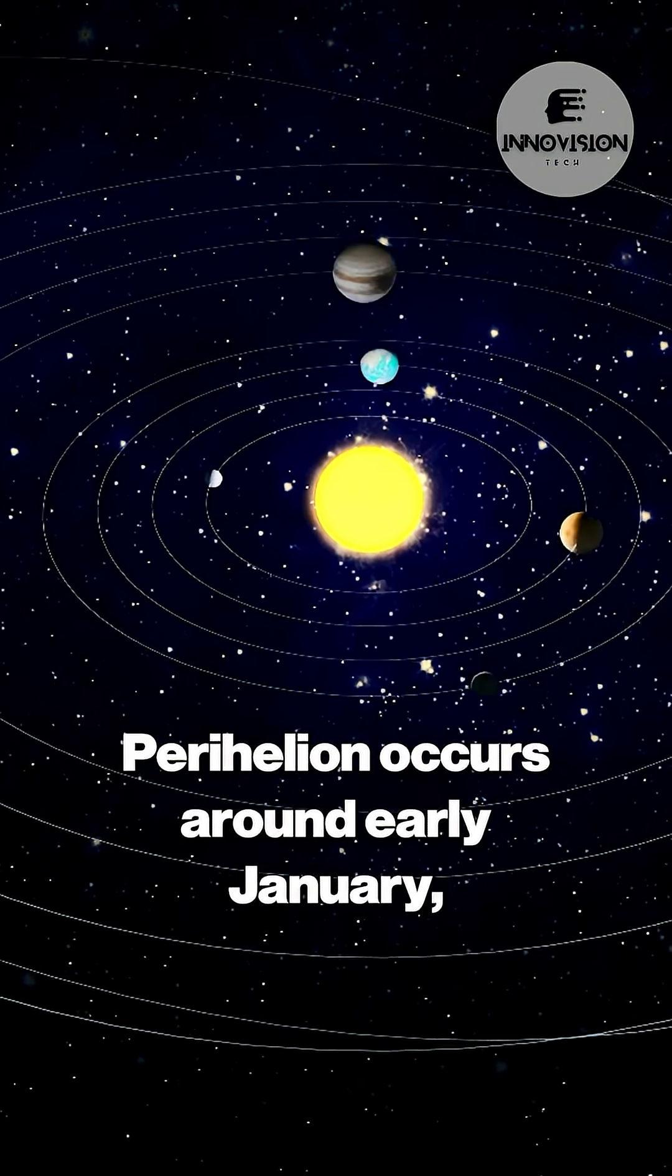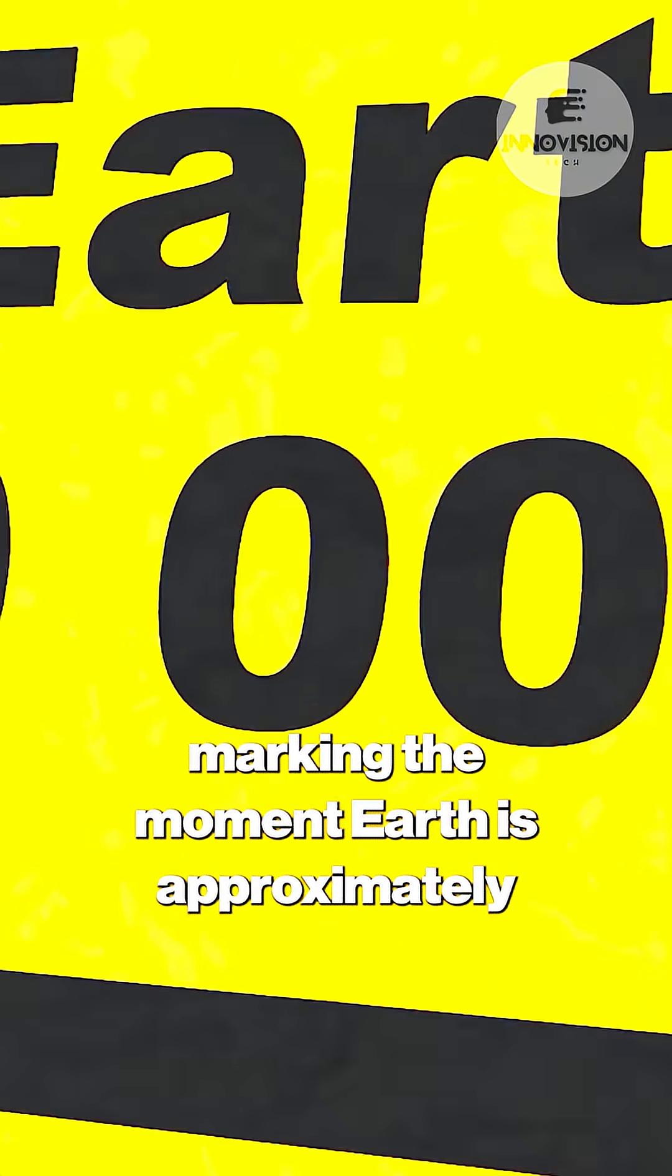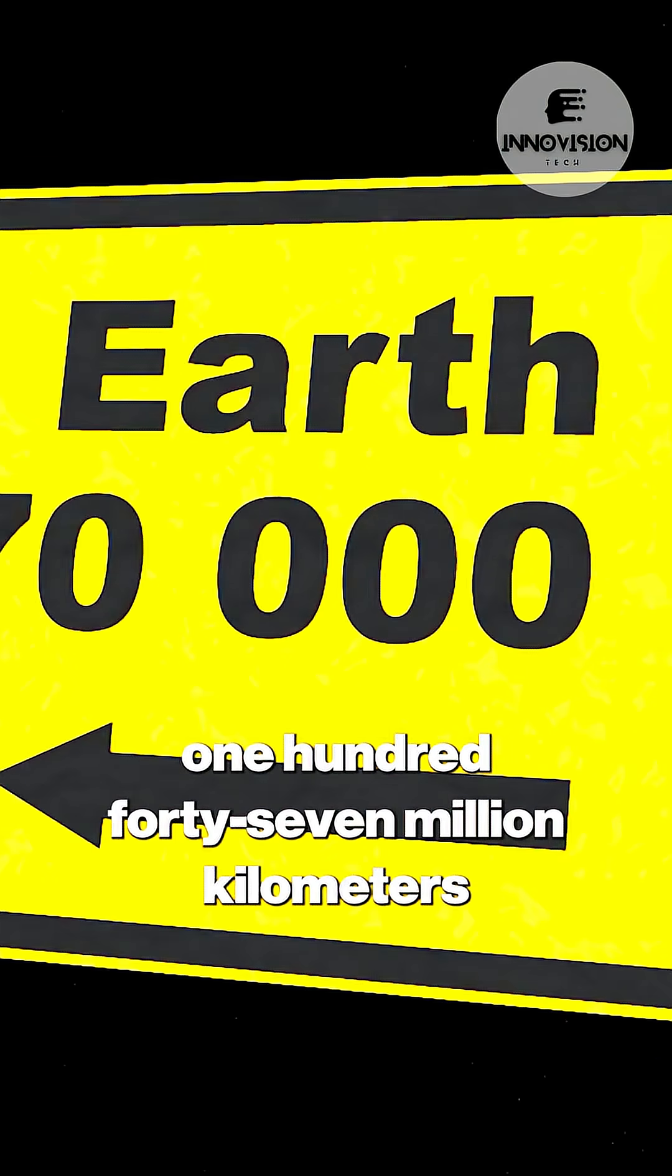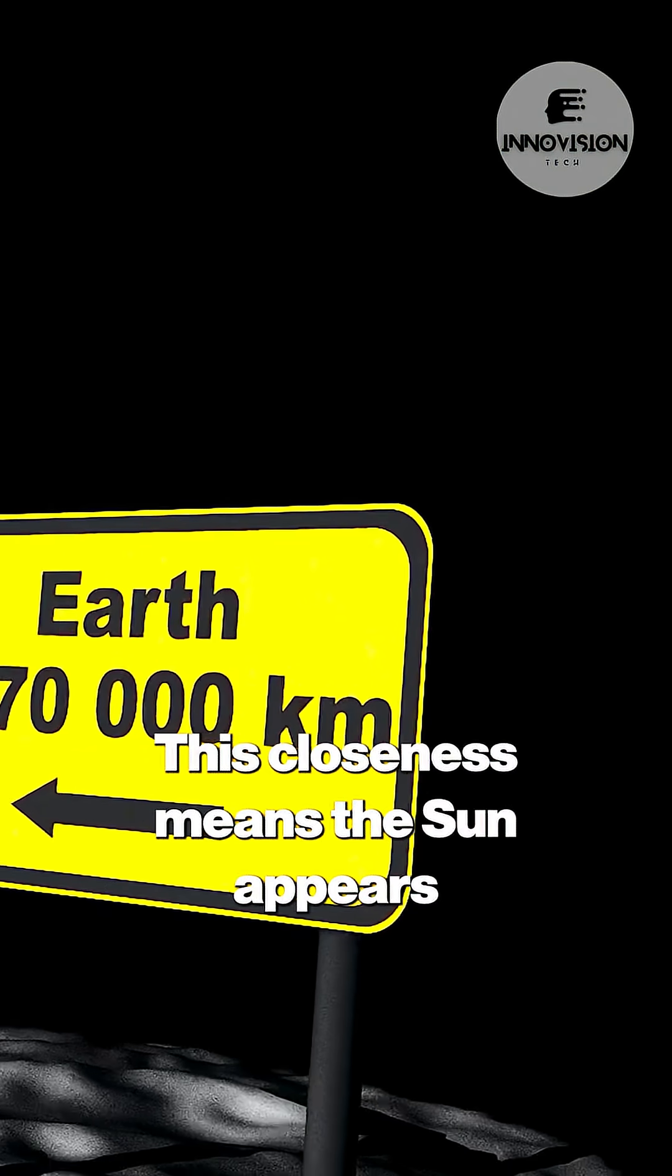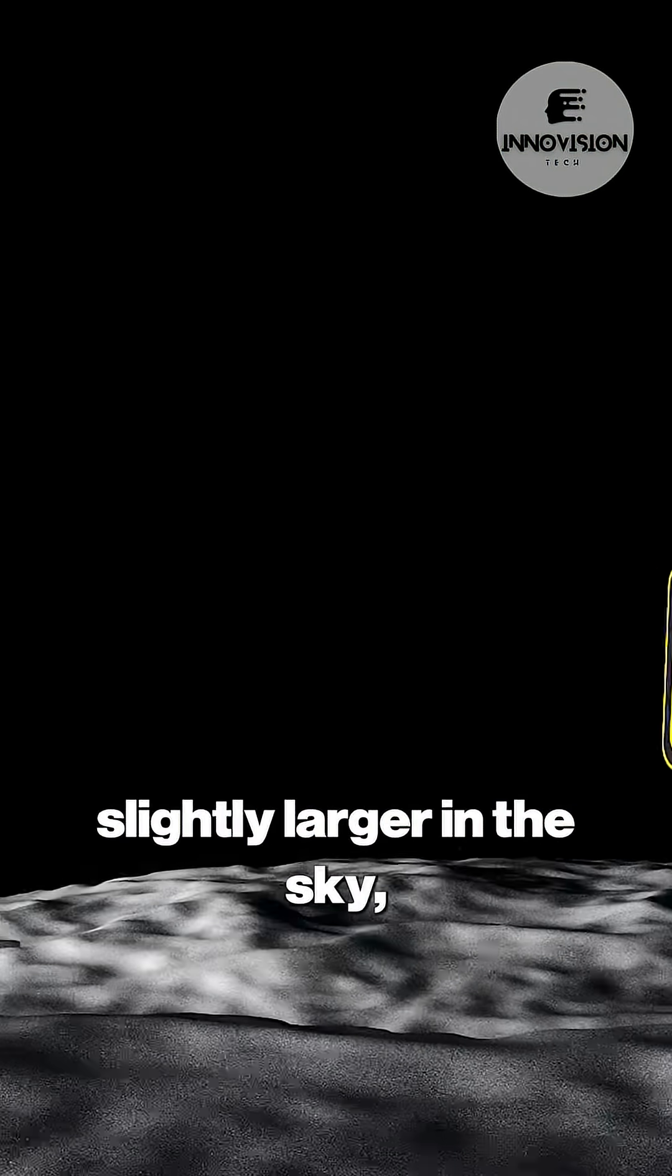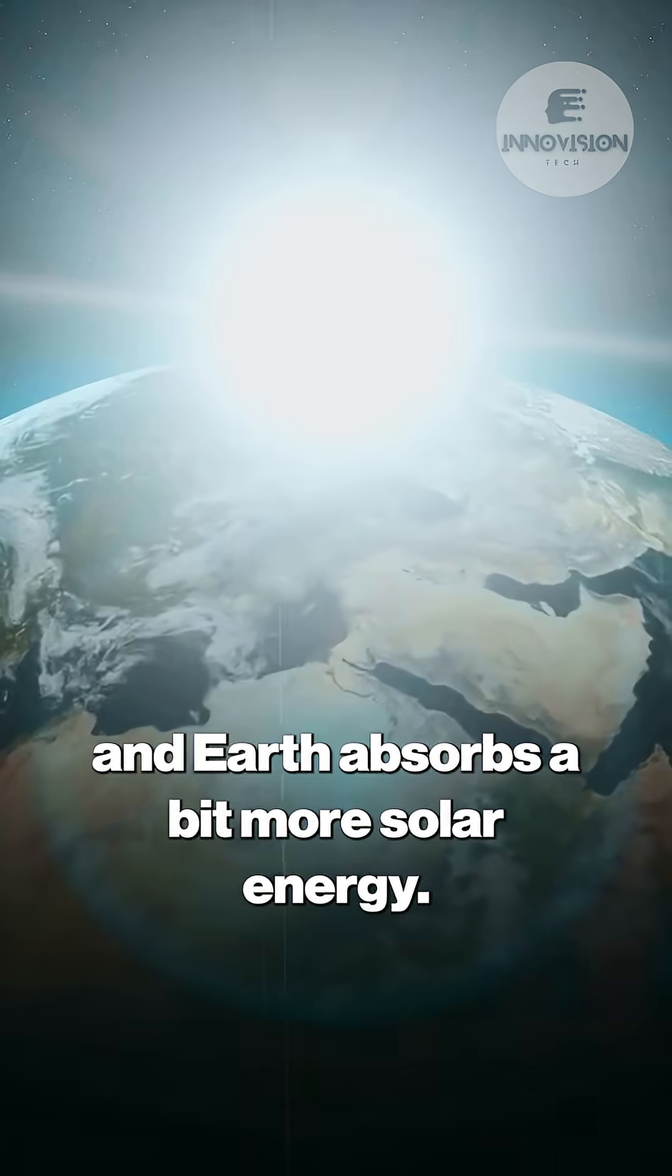Perihelion occurs around early January, marking the moment Earth is approximately 147 million kilometers from the sun. This closeness means the sun appears slightly larger in the sky and Earth absorbs a bit more solar energy.